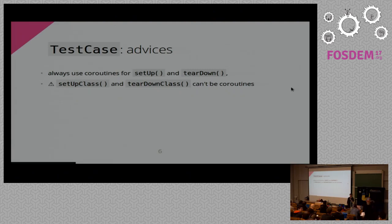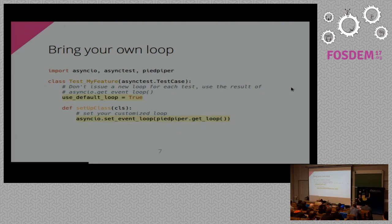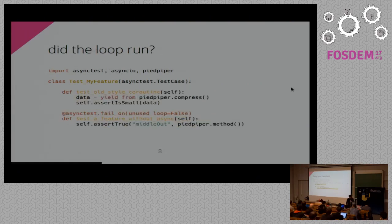Someone opened a ticket to add that feature, and I decided to reject it because I feel like if you try to do that, you will probably break the single most important thing with tests, which is keeping isolation as good as possible. However, if you really want to break this assumption, you can still do it. For instance, in a setUpClass you can ask the test case to use the default loop, so rather than creating a new loop before the test, we just call asyncio.get_event_loop and return the event loop you set right before.